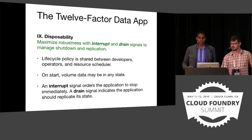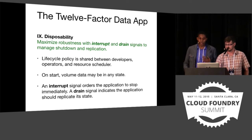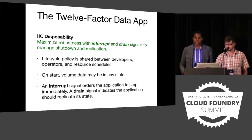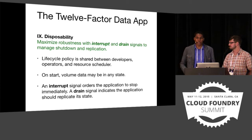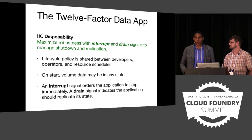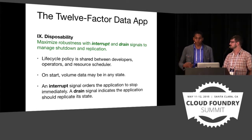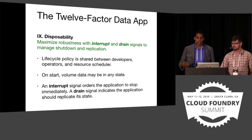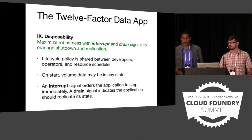In handling disposability — the ephemeral nature of resources in the cloud — we need to expose two kinds of signal handling: an interrupt and a drain. The interrupt tells a data node instance to stop work for a little while and inform anyone monitoring it that it'll be gone for a short period. We may be rescheduling it on a different node or rolling the underlying host for an OS update. The drain signal tells those following this node that it's going offline and they need to take actions to rebalance the data. We need to expose these lifecycle hooks to allow self-healing, self-monitoring processes to work.